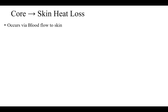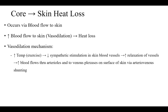Core to skin heat loss occurs via blood flow to the skin. Increased blood flow to the skin is called vasodilation, and that's how the body loses heat. Anytime there's increased temperature — heavy exercise — that decreases sympathetic stimulation in cutaneous blood vessels, and that relaxes the vessels. Increased relaxation of vessels causes increased blood flow through arterioles and to the venous plexuses on the surface of skin — arteriovenous shunting — and that enables more blood flow to the skin, and that's how blood loses its heat.